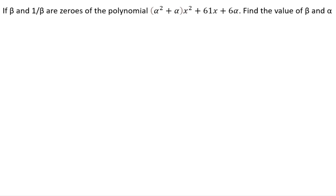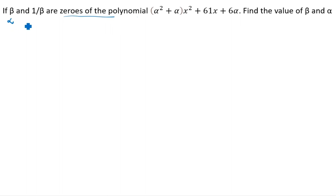Hi friends, today we are going to learn about a polynomial chapter problem. This is a board exam problem. If beta and 1 by beta are zeros of the polynomial.